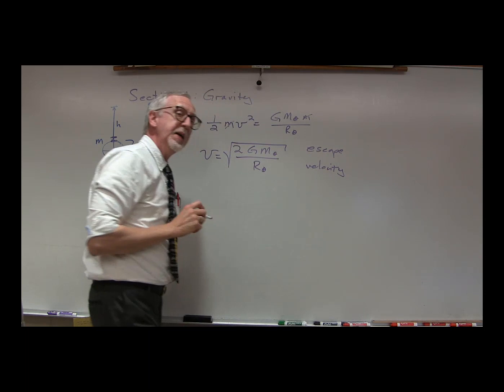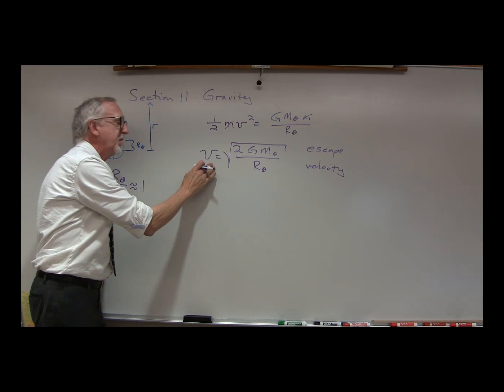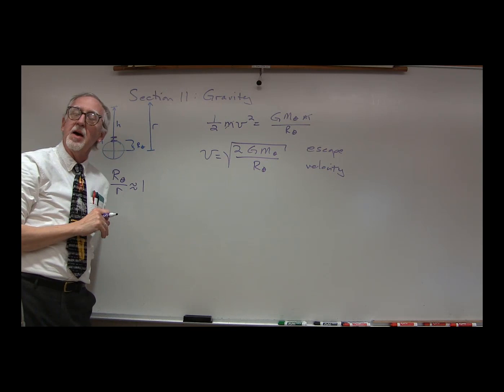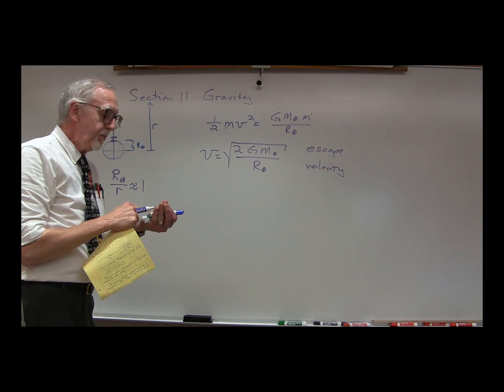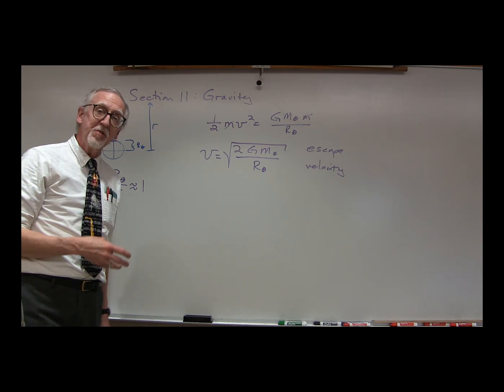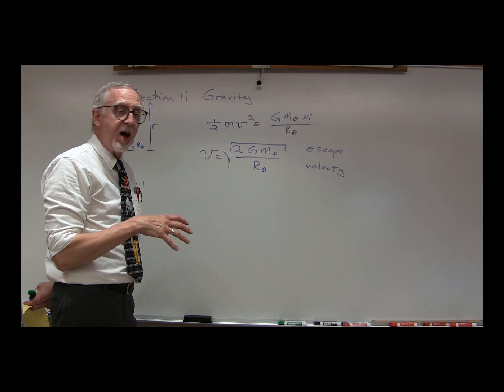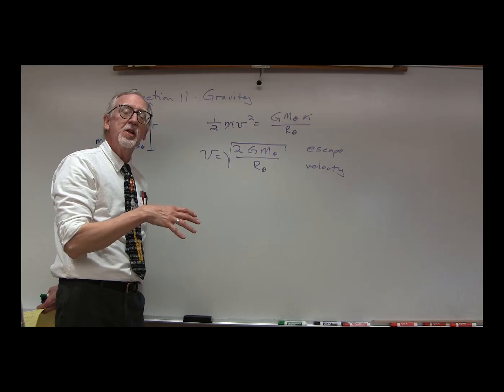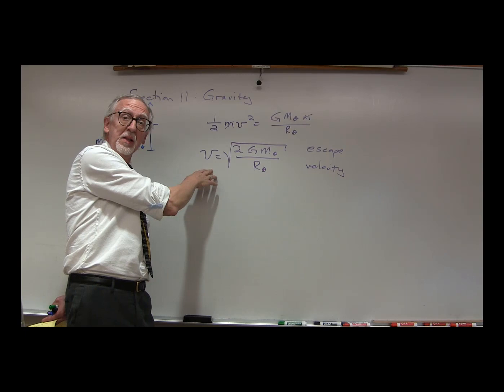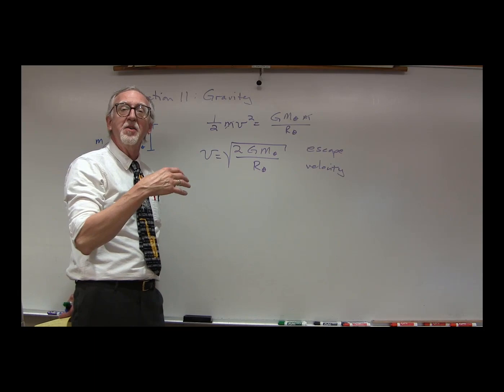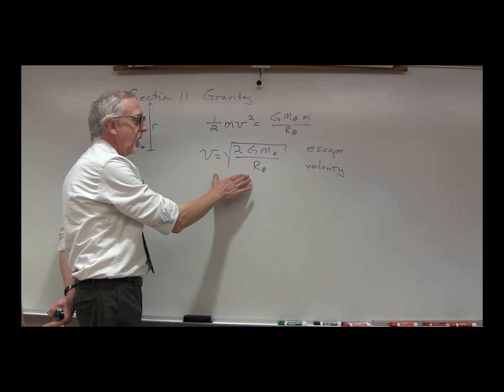If an object were at the surface of the Earth and had a velocity that was that amount or greater, it would be able to escape out into space. This helps us understand how it is that some planets or moons or bodies have atmospheres and some do not. If an object is cold enough that the thermal velocities tend to be less than this, then those atoms and molecules in the atmosphere cannot gravitationally escape. If thermally the objects have a thermal velocity greater than this, then gravity will not be strong enough to hold the atmosphere in and it will escape into outer space.